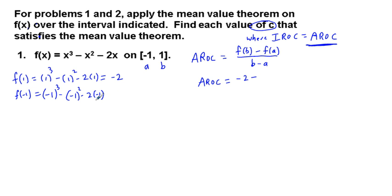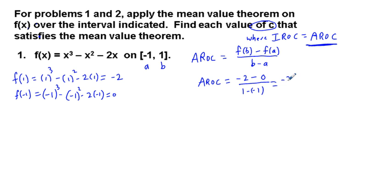f of negative 1 is going to be negative 1 cubed minus negative 1 squared minus 2 times negative 1. That's going to be equal to negative 1 minus 1 plus 2, which equals 0. So f of a is 0. So we have negative 2 minus 0 over b minus a, which is 1 minus negative 1, giving us negative 2 divided by 2, which equals negative 1. That is our average rate of change.